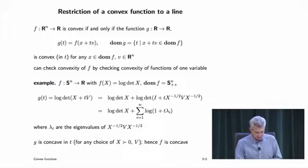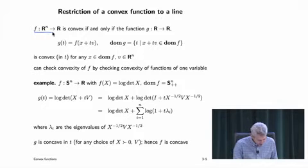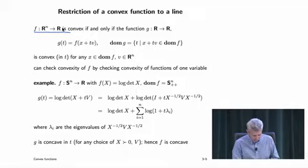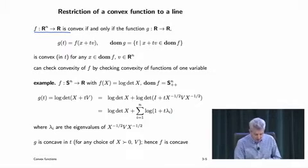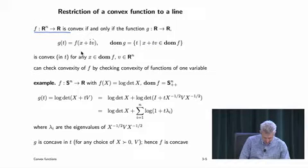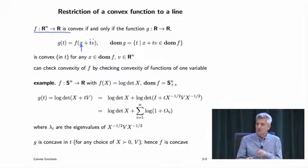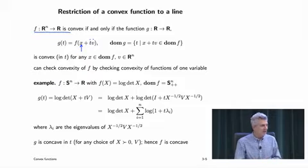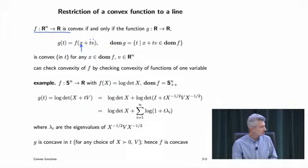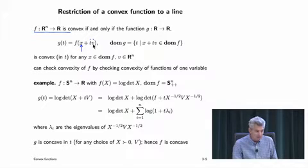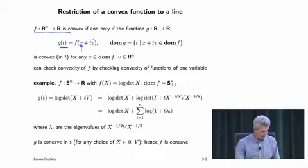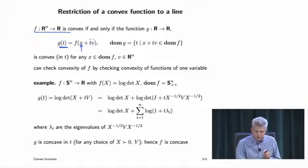Here's a useful trick: you can restrict a function to a line. A line is given by x + tv, where x is the base point, v is the direction, and t is a real parameter. Define g(t) = f(x + tv) — that's a function from R to R. The result is: a function is convex if and only if when it's restricted to all lines, it's convex.